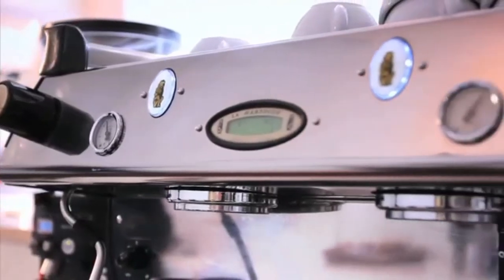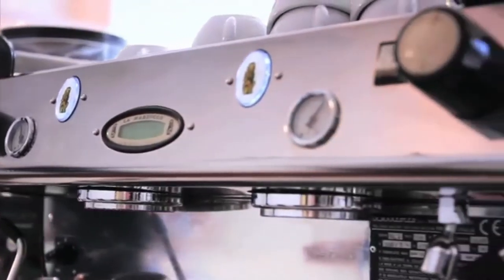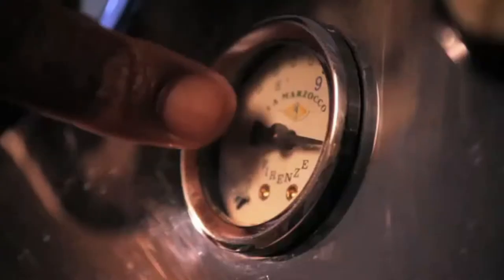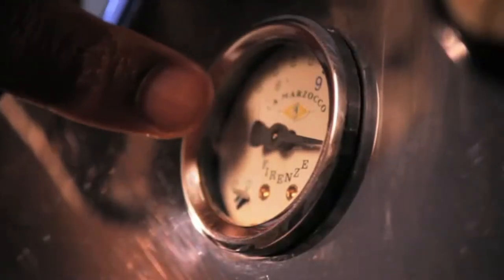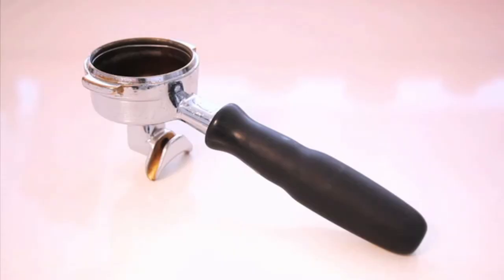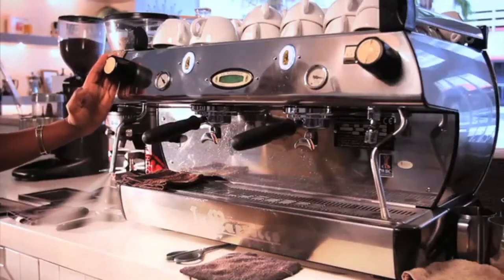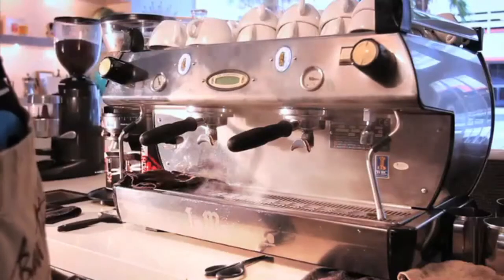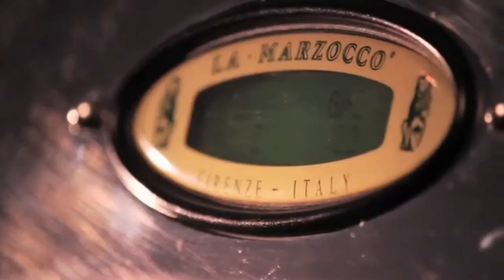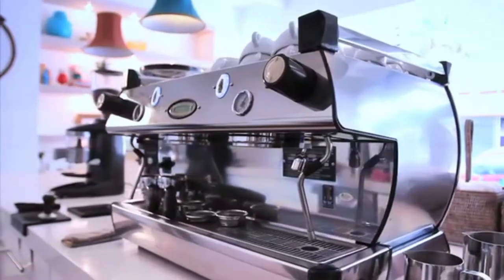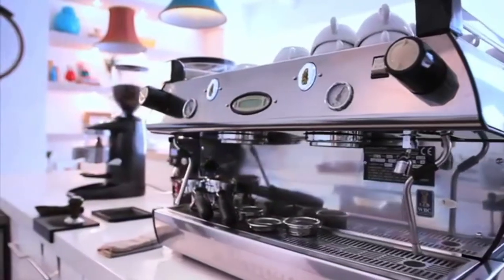The espresso machine is made up of an on and off switch, a cup heating tray, a steam pressure gauge, a group head with an on or off switch, a portafilter, a steam wand with an on or off knob, a hot water on or off switch, the hot water spout or tap, the water pressure gauge, and lastly the drip tray. The parts described above are relatively self-explanatory.